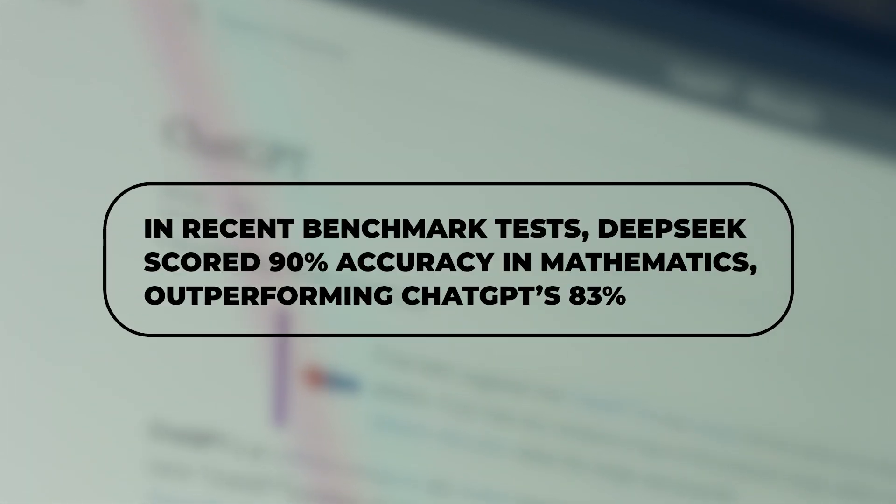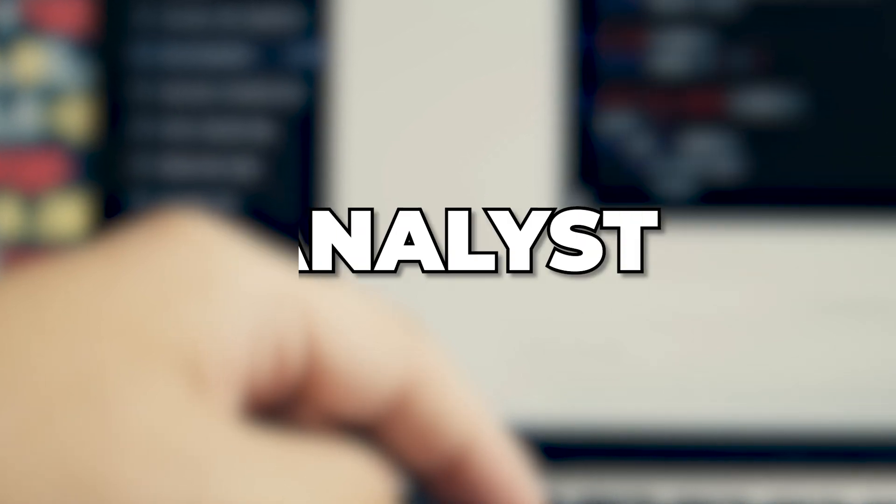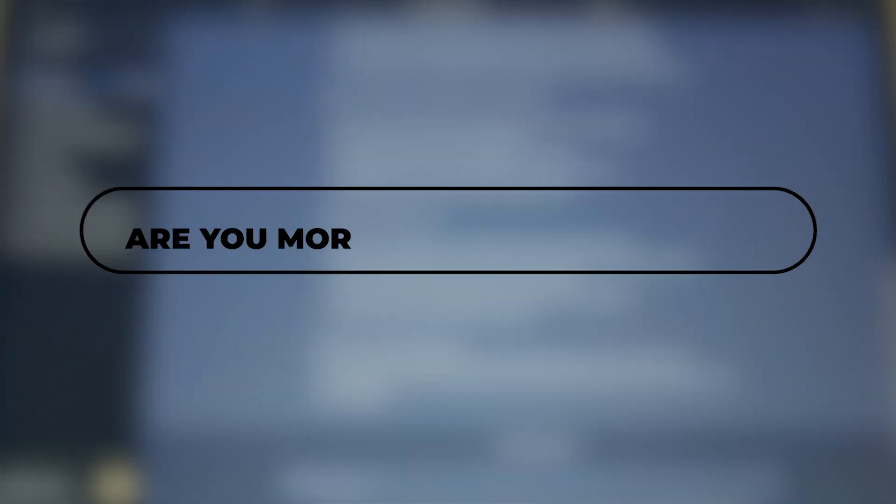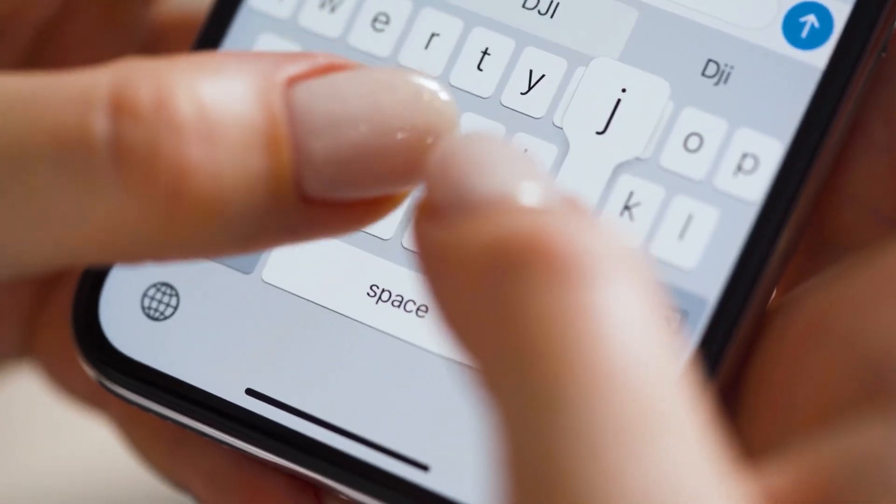Here's a fun fact. In a recent benchmark test, DeepSeek scored 90% accuracy in mathematics, outperforming ChatGPT's 83%. That's a huge difference if you're a coder, researcher, or even an analyst. So this leads me to you: are you more of a creative thinker or a data-driven problem solver? Let me know in the comments.